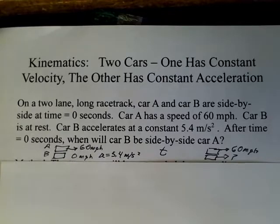Car A is traveling at 60 miles an hour. Car B is zero miles per hour. Car A has constant speed. Car B is going to accelerate at a constant 5.4 meters per second squared. So time equals zero, they're side-by-side. Car B is going faster and faster and faster. Eventually, it will catch up with car A.